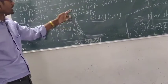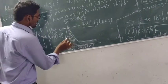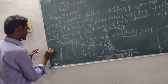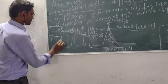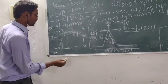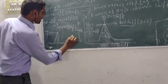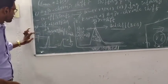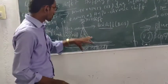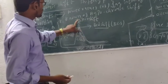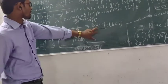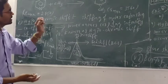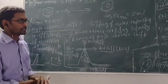To conclude: hyperchromic shift means the intensity of absorption is increasing; hypochromic shift means the intensity of absorption is decreasing. Red shift and blue shift are related to wavelength; hyperchromic and hypochromic shifts are related to the absorption intensity. These are the overall basic terminologies of UV-Vis spectroscopy, which are very important. Thank you.